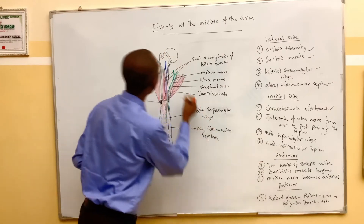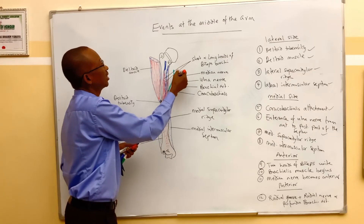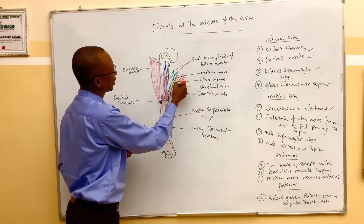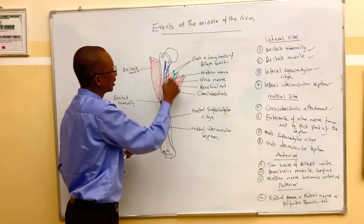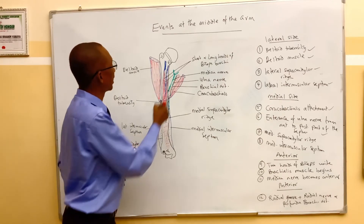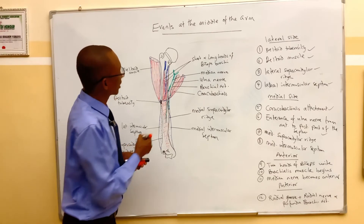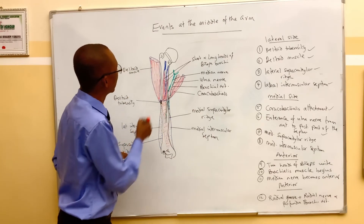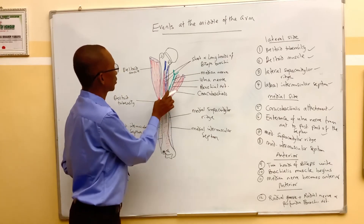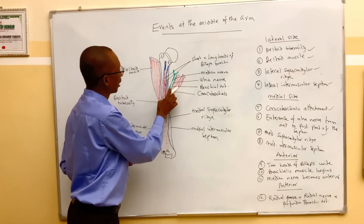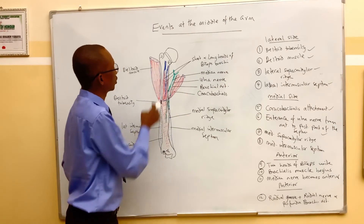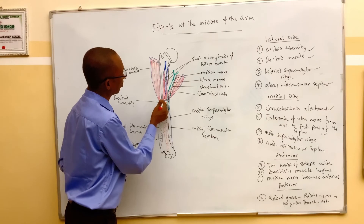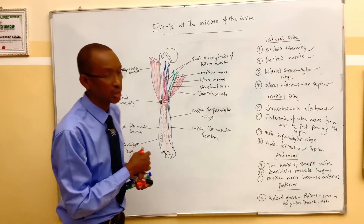The median nerve from the brachial plexus is initially lying lateral to the brachial artery. By the time it comes down to the middle of the arm, it crosses over the brachial artery so that it now lies anterior to the brachial artery. So there are three events that take place at the anterior aspect of the middle of the arm: the two heads of the biceps brachii unite; the median nerve lies anterior to the brachial artery having previously been lateral to it; and the brachialis muscle begins from the middle of the arm and passes downward to get attached into the ulnar bone.